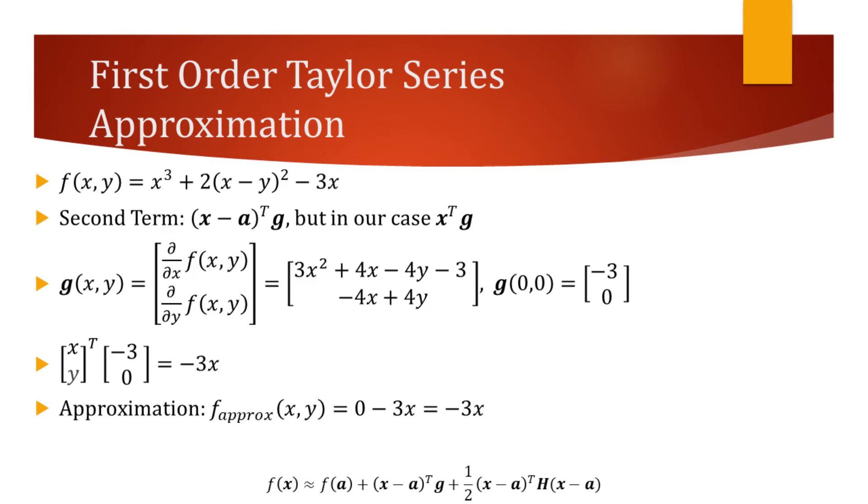The second term is the dot product of the gradient of the original function and the result of subtraction of our point of interest from the input vector. Since we are trying to find the approximation at the origin, there is no need for subtraction. We will just have to find the gradient of the original function, evaluate it at the origin, and then find the dot product. All of these calculations are displayed on the slide. As a result, we obtain the first order Taylor series approximation.